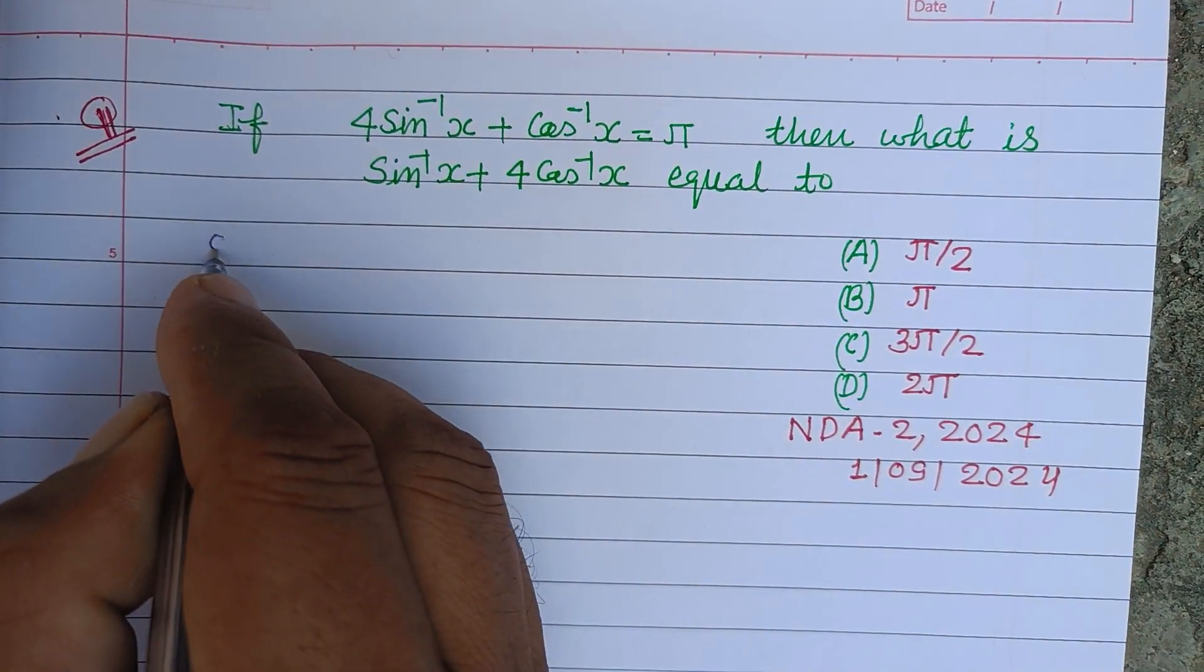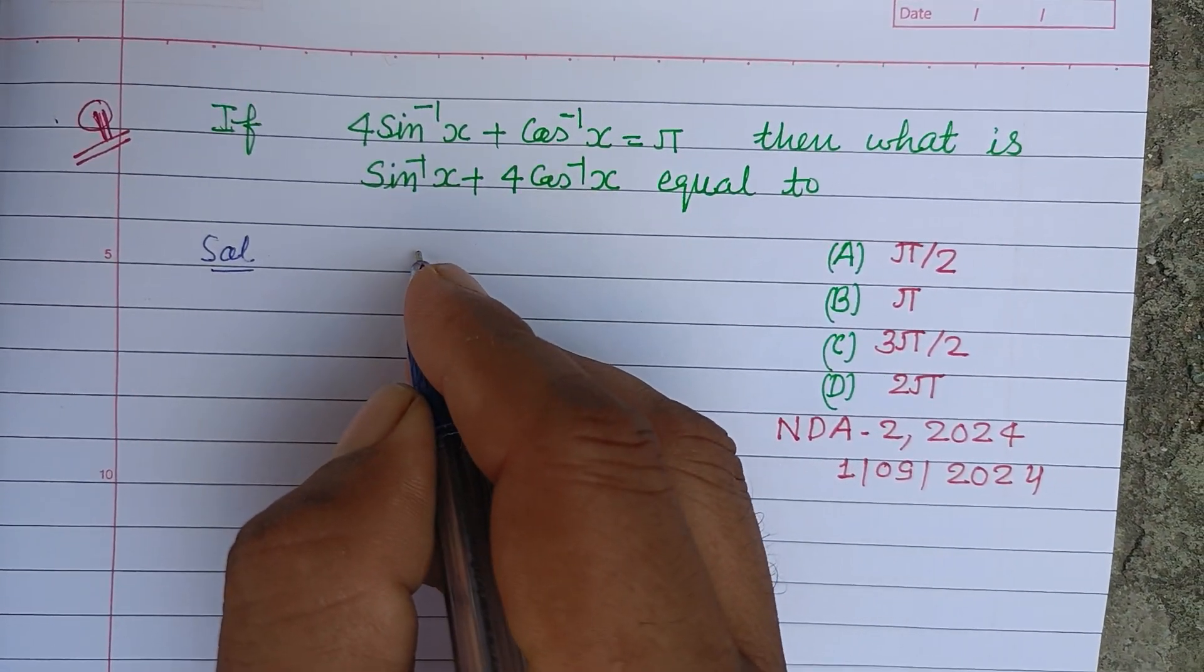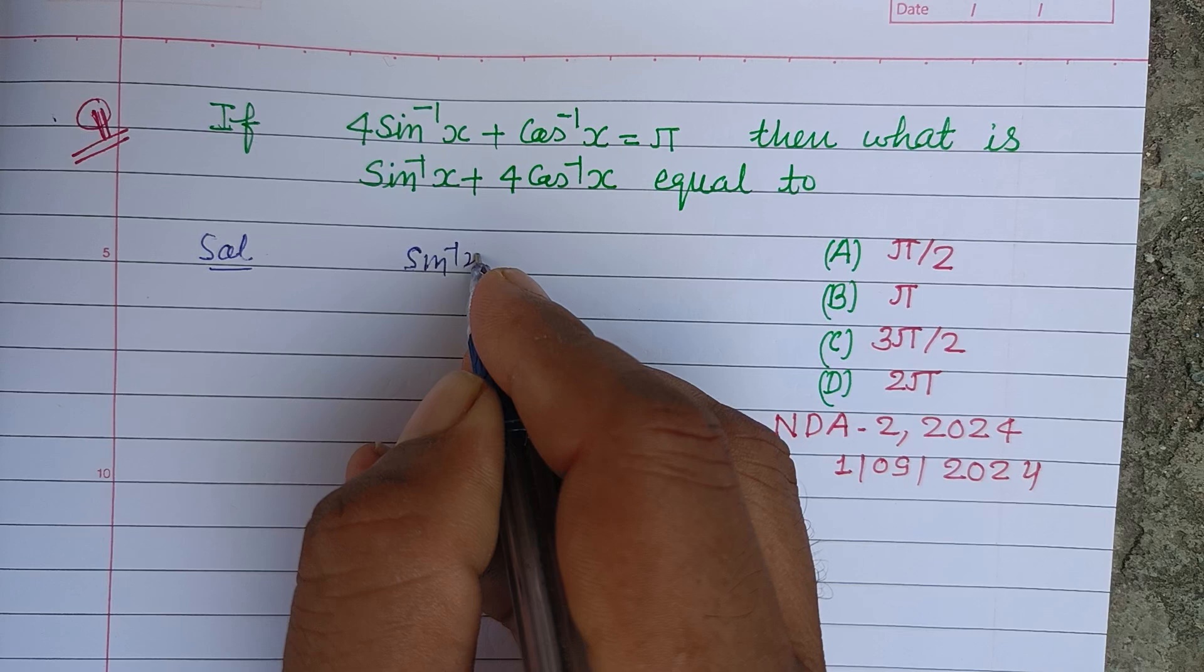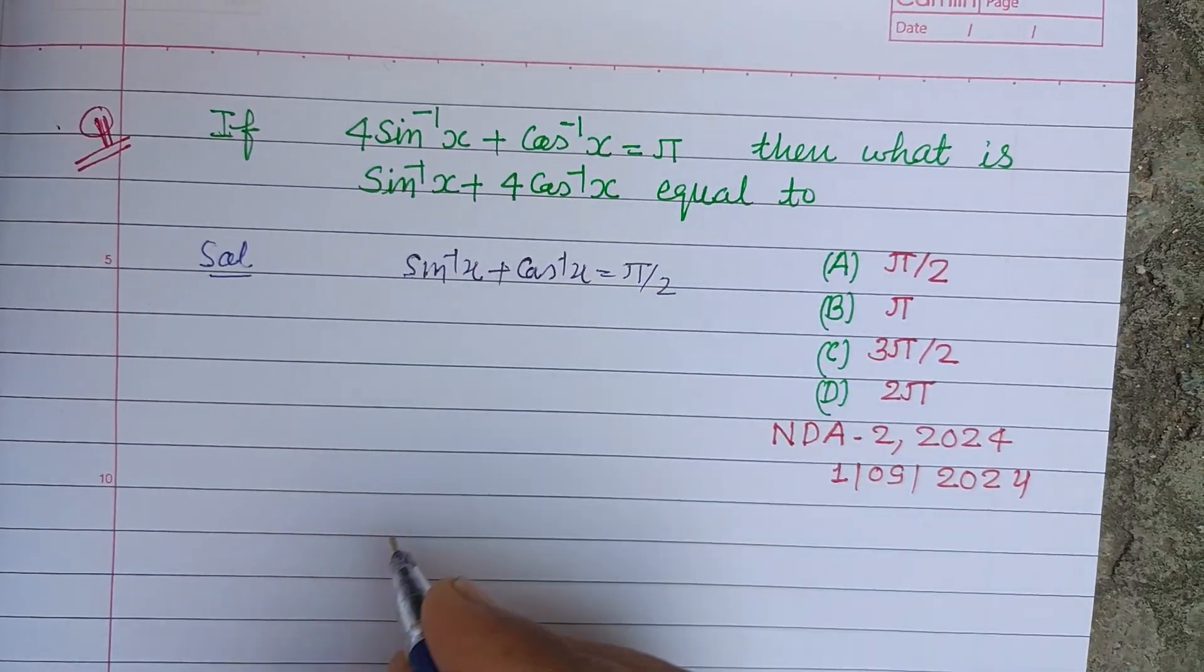So students, in inverse trigonometric functions we know that sin⁻¹x + cos⁻¹x = π/2.